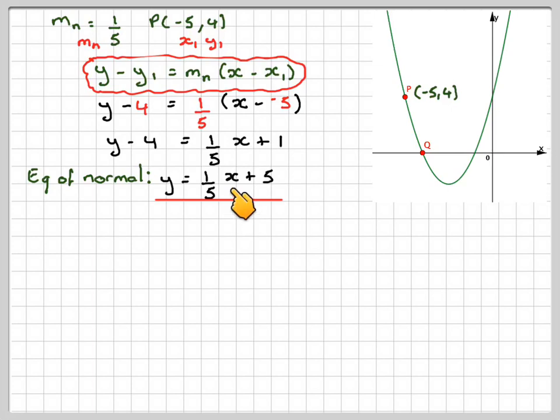We need to find where this line cuts the x-axis. It's going to be somewhere down here. On the x-axis, y equals 0. So 0 equals 1 fifth of x plus 5. Taking the x over to the other side, we're going to have minus 5 equals 1 fifth of x. X equals minus 25.